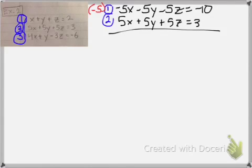So, let's see what happens when I add going down. My x's eliminate, my y's eliminate, my z's eliminate. So, I'm going to write 0 on this side. And then on the right side, I get negative 10 plus 3, which is negative 7.